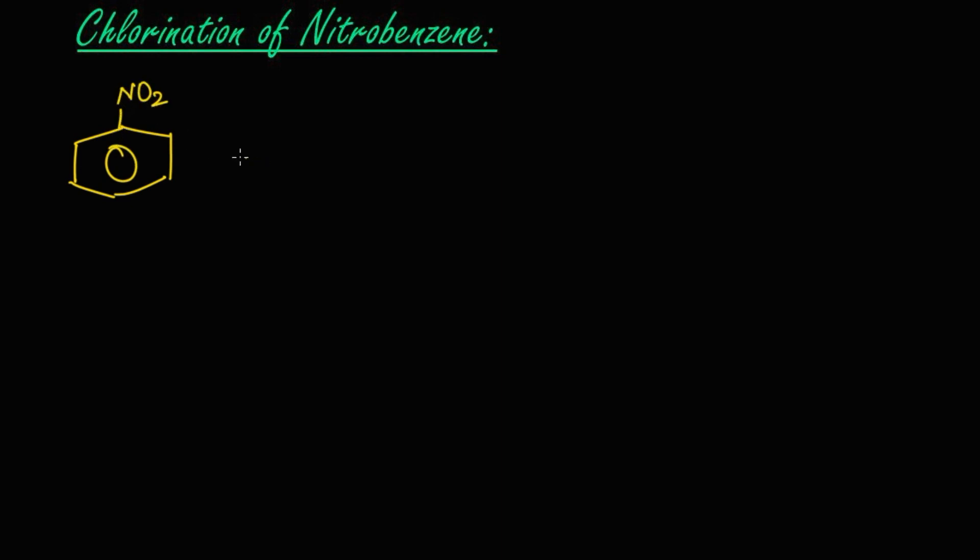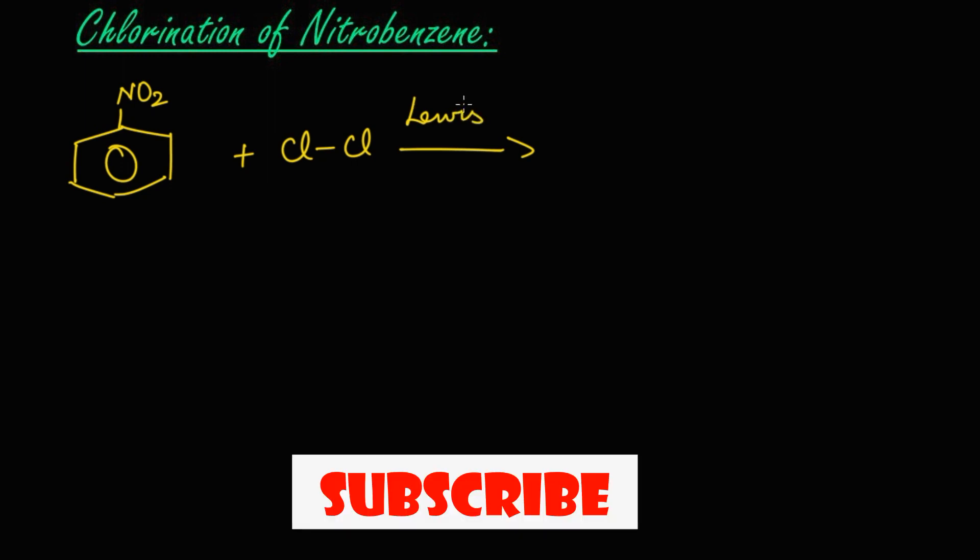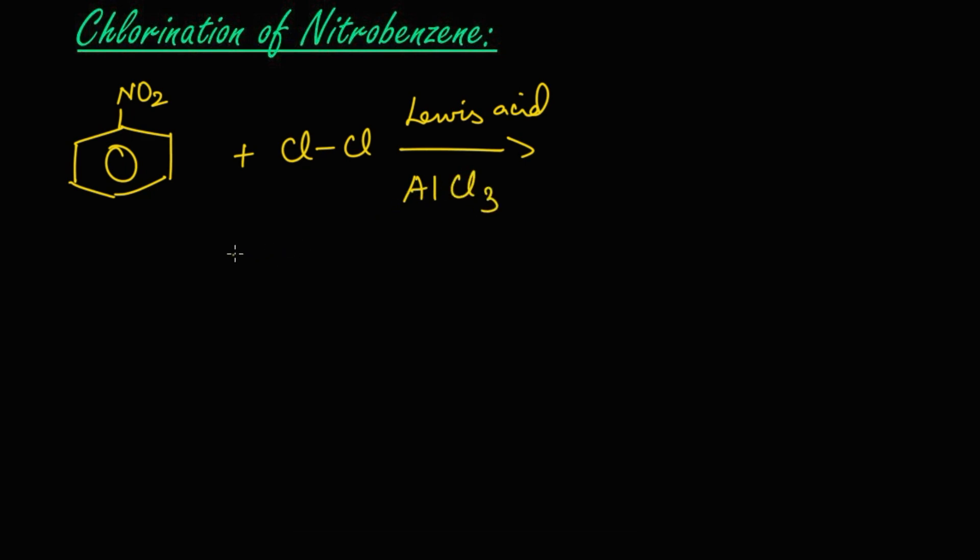This is nitrobenzene. It reacts with chlorine, that is Cl2, in presence of Lewis acid, that is anhydrous aluminum chloride AlCl3. What happens during the reaction? This nitrobenzene is a meta directing group.